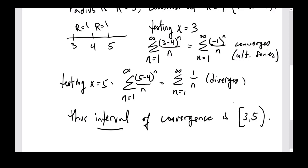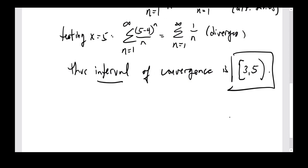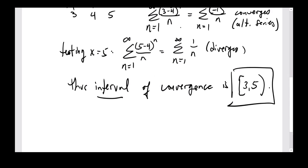The final interval of convergence is from 3 to 5, including 3 but not 5. That's the end of this video — I was trying out a different style here. I hope it's been helpful, thank you for watching.